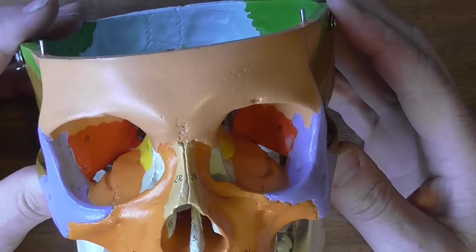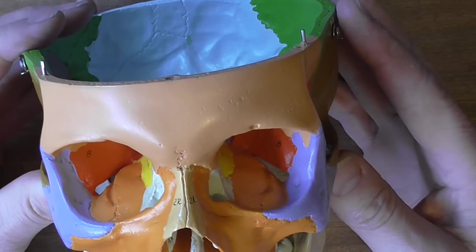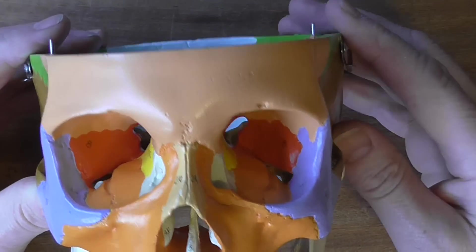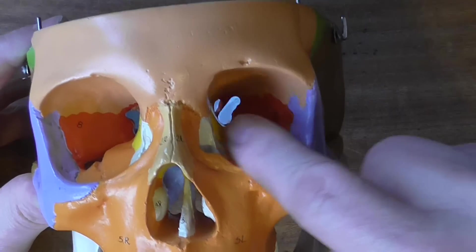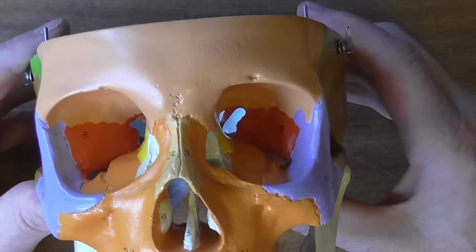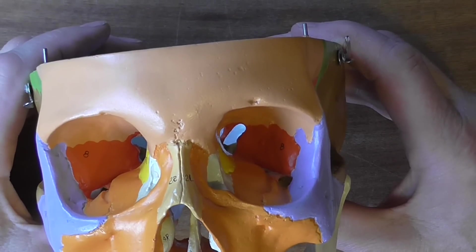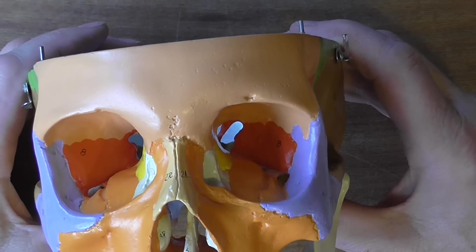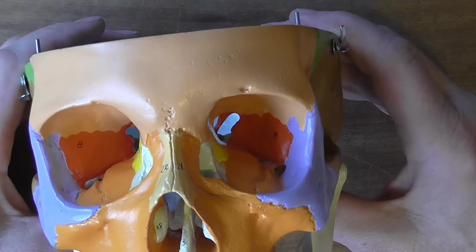Let's now look at the bony orbits in which the eyeballs are contained. There are bilateral, two of them, and the orbit is the socket into which the eyes fit and are protected alongside other associated structures such as the extraocular muscles that are responsible for movement of the eye.